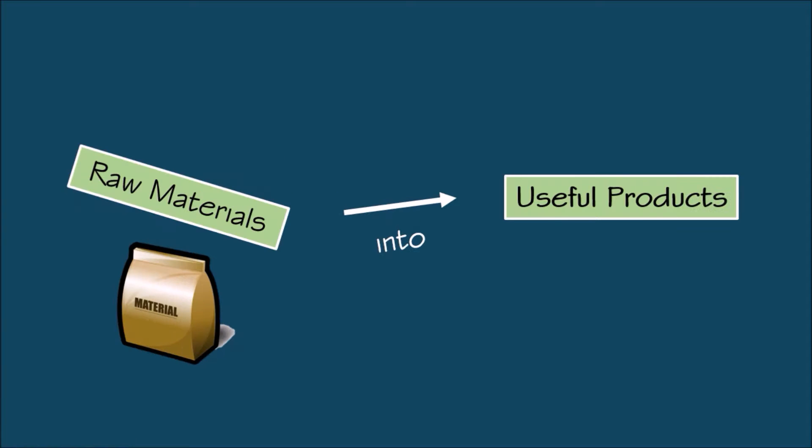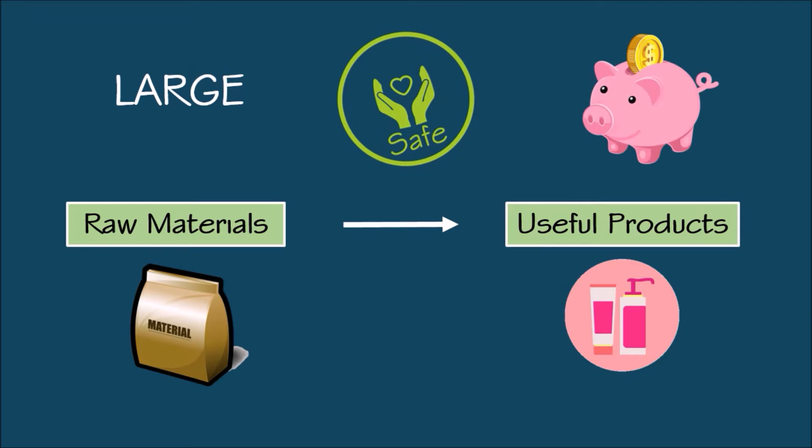Chemical Engineering is the conversion of raw materials into useful products in a large, safe and economical way.